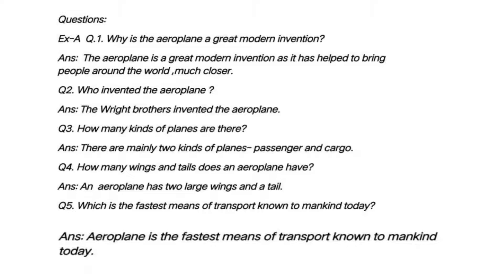The next question is: which is the fastest means of transport known to mankind today? This also we have seen in the paragraph. The answer is the aeroplane. Aeroplane is the fastest means of transport known to mankind today. There is no space in the book, so you will do the paragraph comprehension in your notebook. Open your notebook and write down the question and then the answer.